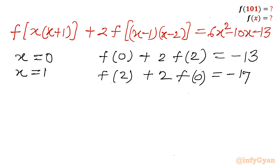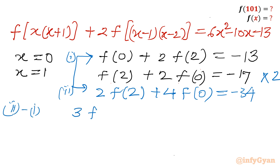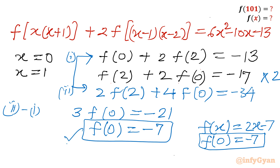Multiplying the first check equation by 2 gives 2·f(2) + 4·f(0) = -34. Subtracting the first from the second: 3·f(0) = -34 + 13 = -21. Dividing by 3 gives f(0) = -7. As per our derived equation f(x) = 2x - 7, f(0) = 2(0) - 7 = -7. This confirms that f(x) = 2x - 7 is correct.